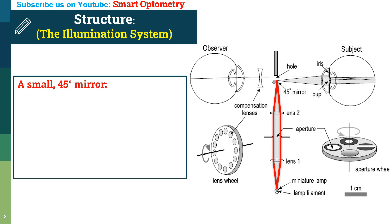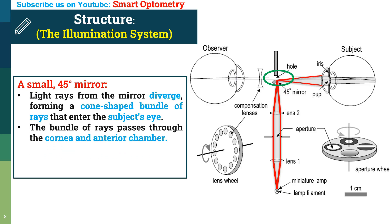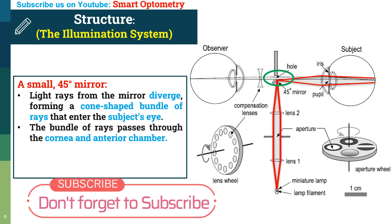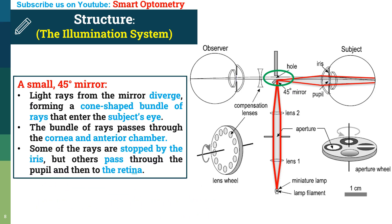The small 45-degree mirror: light rays from the mirror diverge, forming a cone-shaped bundle of rays that enter the subject's eyes. The bundle of rays passes through the cornea, anterior chamber, crystalline lens, and vitreous to reach the retina. Some rays are stopped by the iris, but others pass through the pupil and then to the retina.